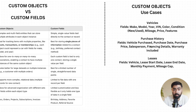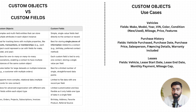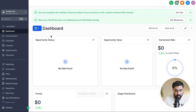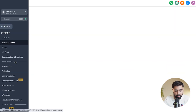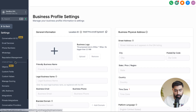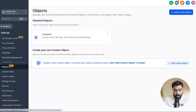Now that we've talked in detail about custom and standard objects and the differences between custom objects and custom fields, let's dive into a Go High Level subaccount. I'll show you a step-by-step process on how to create these custom objects and associations, and how to make the best use of them. Once you're in your subaccount, the first thing you need to do is head over to Settings, and if you scroll down, you'll see Objects listed as a new feature.